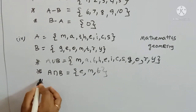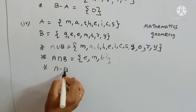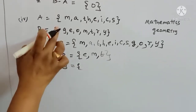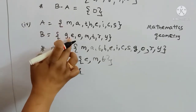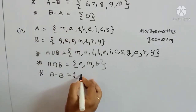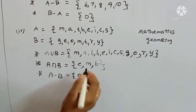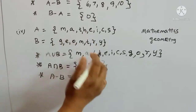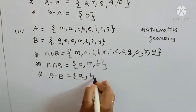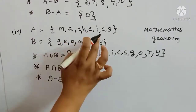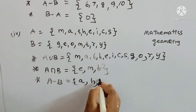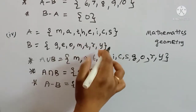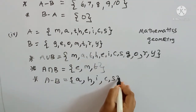A minus B — elements in A not in B. M is there in B, so skip. A is not in B, so include. H is not in B. E is not — wait, E is common. I is not in B. C is not in B. S is not in B. So A minus B = {a, h, i, c, s}.